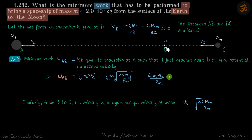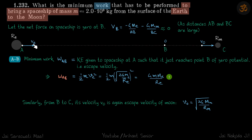For the rocket to reach point B, how much energy should it have? We use the assumption that point B is pretty far from both the Earth and the Moon compared to the radius of both. So we can say the potential at point B is: minus G·M_E / AB minus G·M_M / BC. Since AB and BC are quite large, the potential at point B is approximately zero — the same as the potential at infinity. This means the energy for the rocket to reach point B is the same as the energy needed to go to infinity, which is (1/2)·m·v_escape².